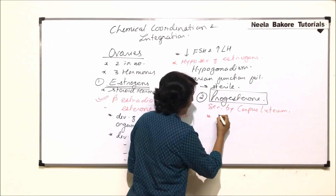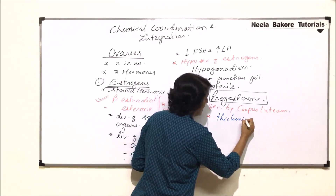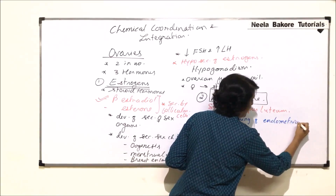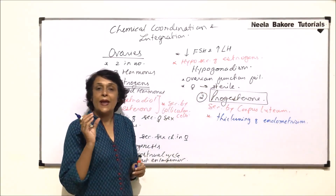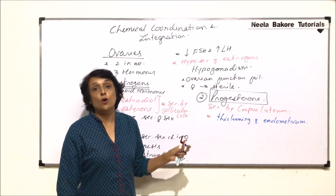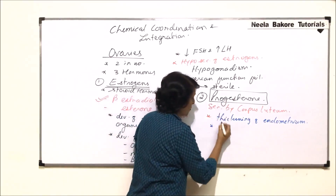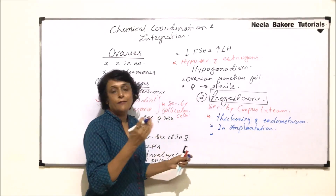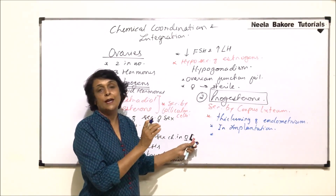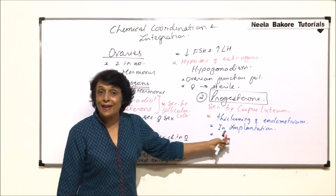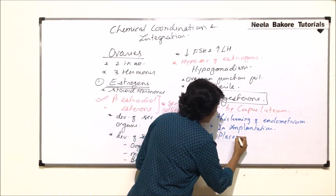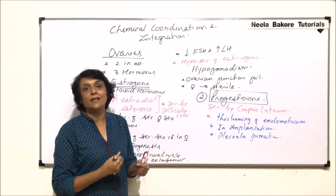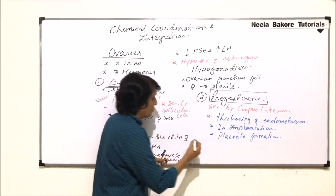The functions performed by progesterone: first, it helps in thickening of the endometrial lining of the uterus. When the endometrium becomes thick, the inner layer of the uterus thickens so implantation can take place. Implantation means the zygote, after certain divisions reaching the morula or blastula stage, gets implanted in the uterus. It also helps in placenta formation so that the embryo starts getting nourishment from the maternal tissue.